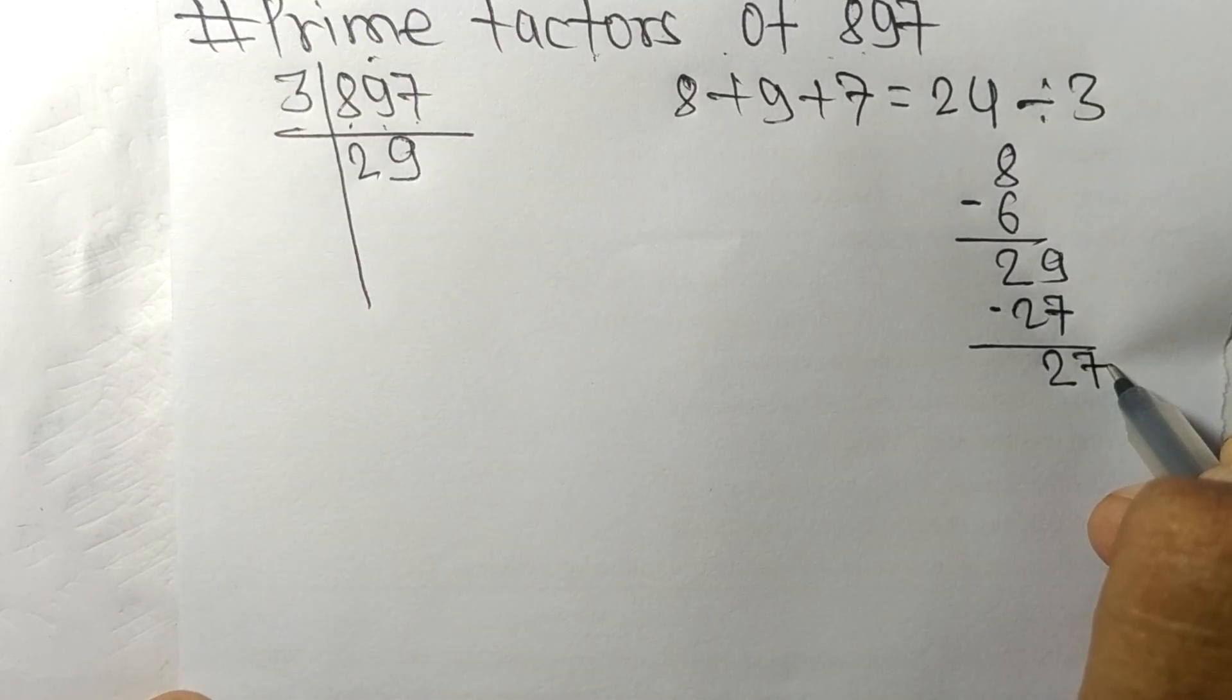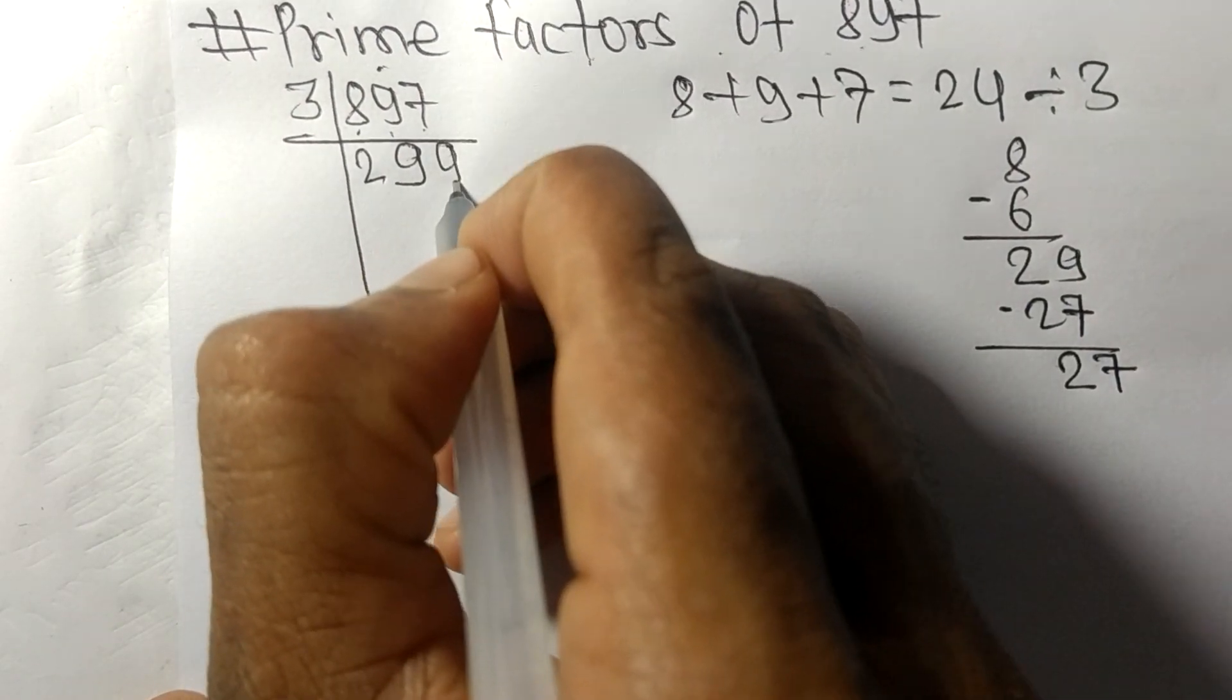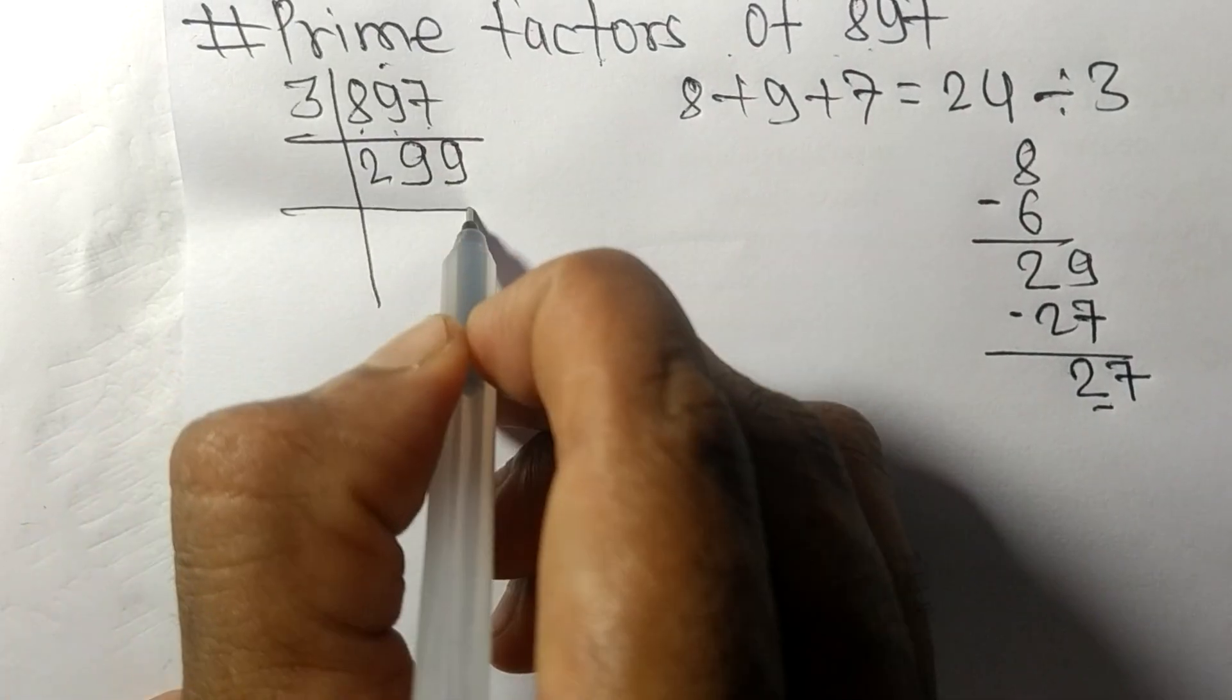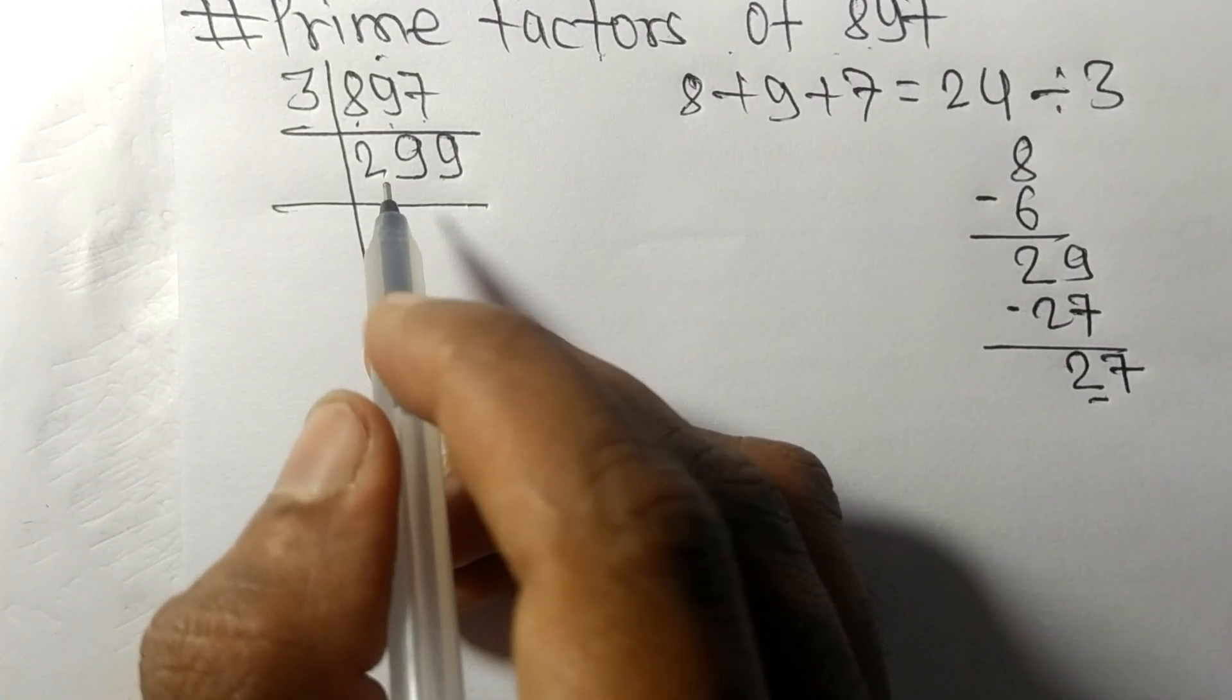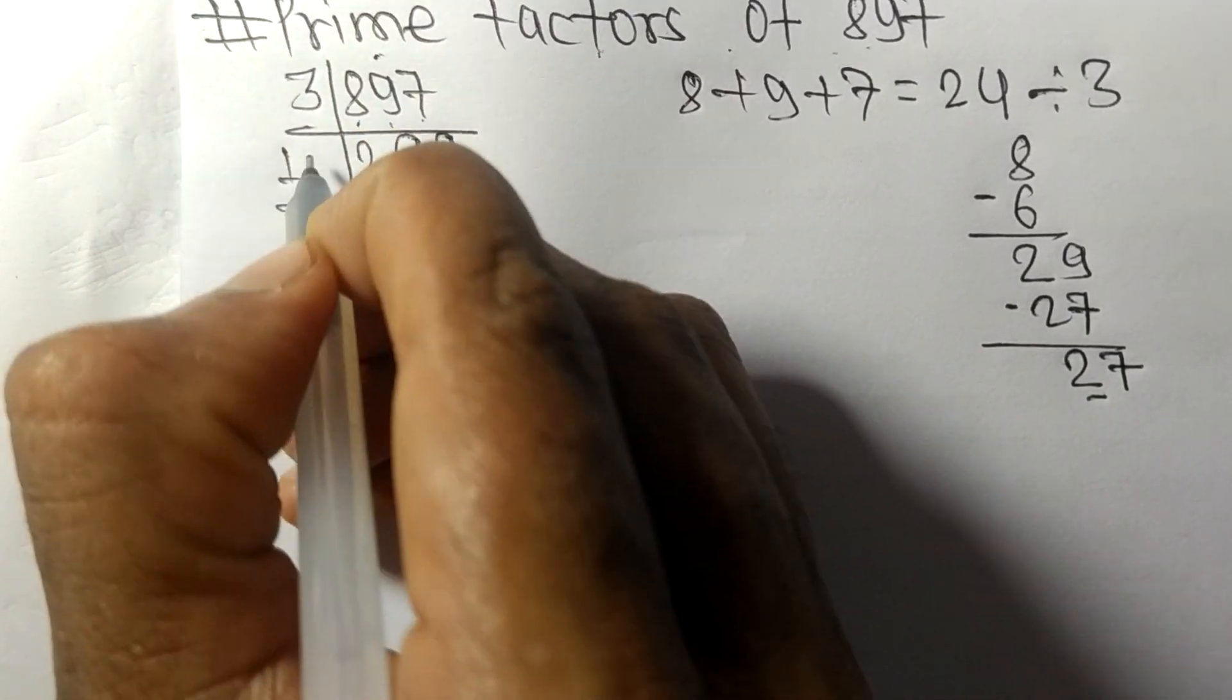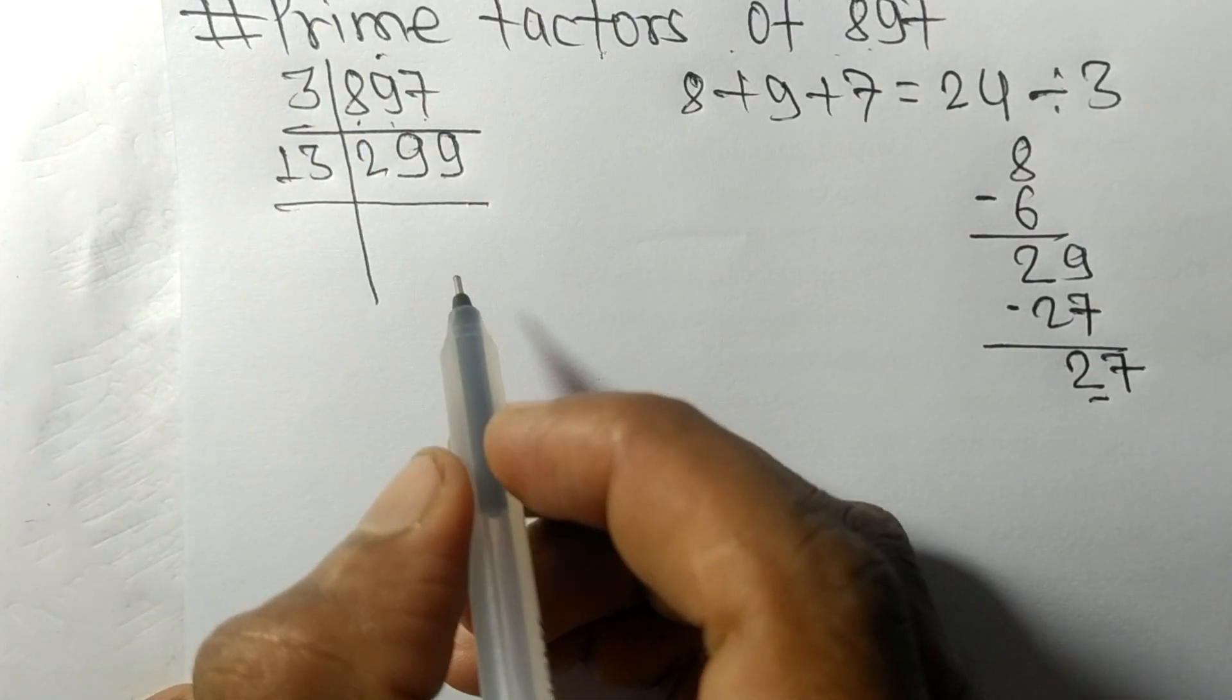Now we got 299, which is exactly divisible by 13. First we have 29, so 13 times 2 means 26, on subtracting we get 3, this 9 makes 39.